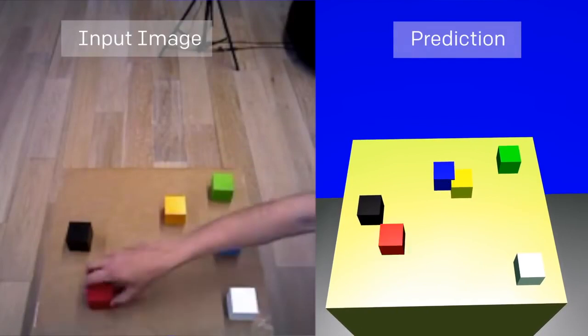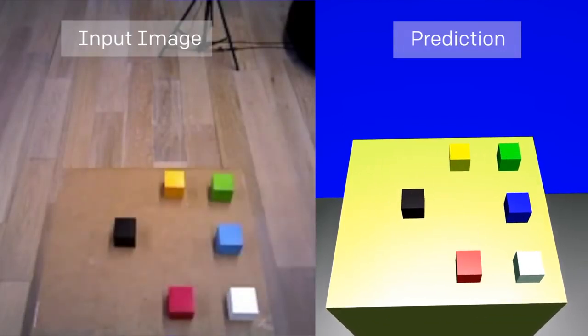After training, the network can find the blocks in the physical world even though it's never seen images from a real camera before.